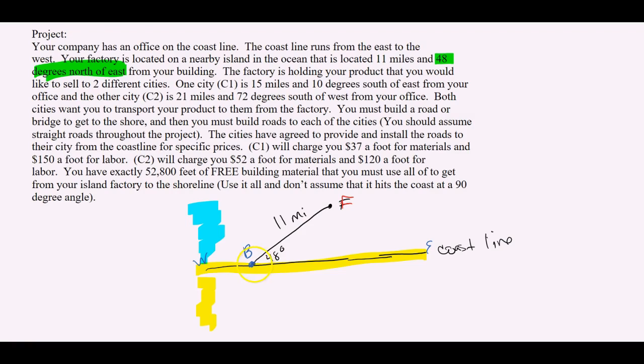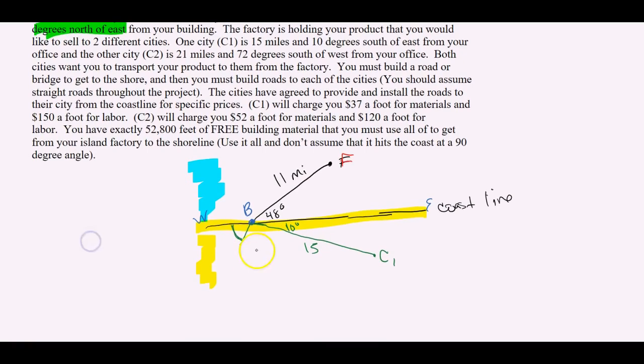One city is 15 miles and 10 degrees south of east from your office. So if my office building is here, I need to go 10 degrees south of east. So I'm going to start in the east and go 10 south of that. And then it says it's 15 miles away. So that's a little 10, 10 degrees south of east. And that's going to be city one. City two is 21 miles. So it'll be a further distance.